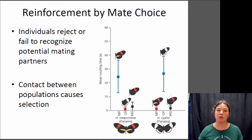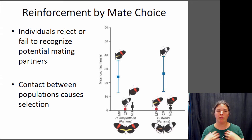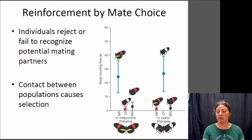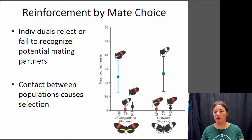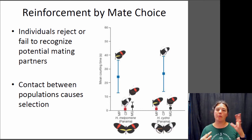Reinforcement often occurs through mate choice, where individuals recognize someone within their own group and avoid individuals who are not. This usually arises after the populations come into contact and produce less-fit offspring — individuals who are picky and only choose mates from their own group have higher fitness. An example involves two closely related butterfly species that prefer to mate with individuals that look like them, spending more time courting similar-looking individuals and less time courting different-looking ones.